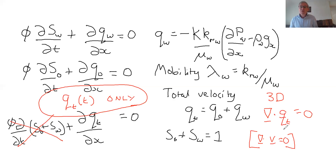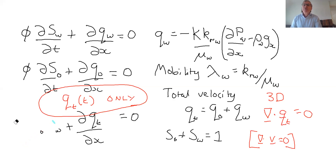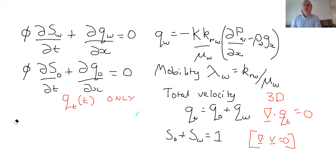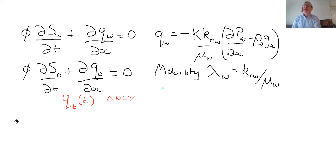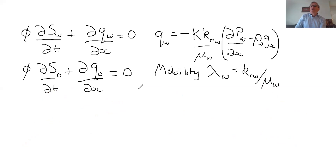So Qt is something that we know — it's a function of time — and it's going to turn out to be a boundary condition. If we're thinking about flow in an oil field, we have wells where we are injecting water. As the engineer you design the well to be injecting water at a certain rate, so Qt is a boundary condition — something you impose, something you design.